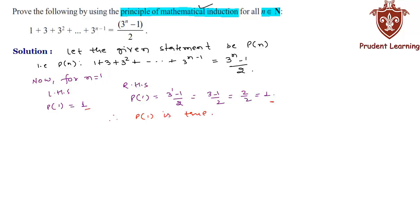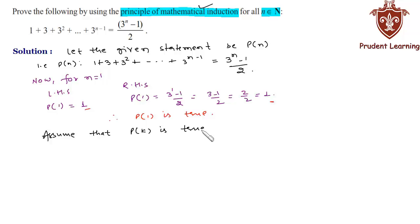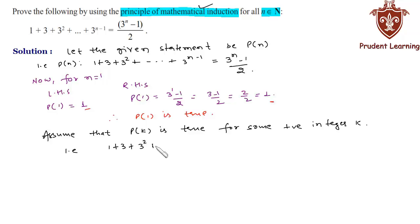Our second step is to assume that the given statement is true for P(k), where k is some positive integer. Assume P(k) is true: 1 + 3 + 3² + ... + 3^(k−1) = (3^k − 1) / 2. Let us call this equation 1.